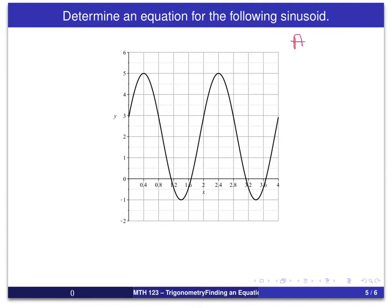So here we have that. Just as a quick review, a is 3, b is π, and d is equal to 2.